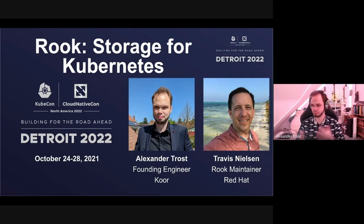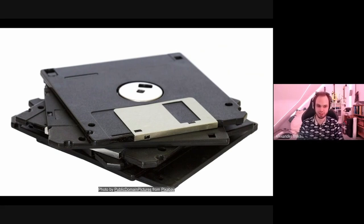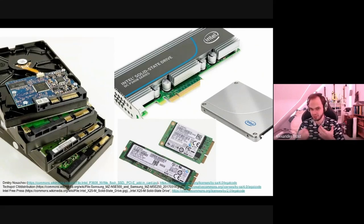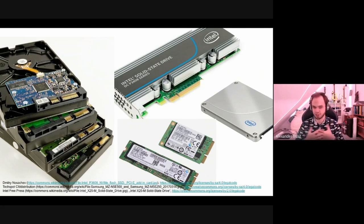We're going to start diving into what Rook is — storage for companies. We don't want customer data starting on a floppy disk anymore, so let's go a step further. We have hard drives, SSDs via PCIe connections or NVMe, flash-based memory — all much faster than before. It's not just faster but also so much more capacity with these new storage types.